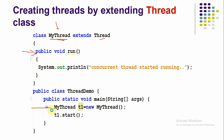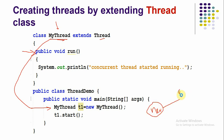To create a thread, simply create an object for this class: 'MyThread t1 = new MyThread()'. The thread is now in the new state. To move it to the runnable state, call the start() method: 't1.start()'.